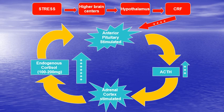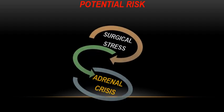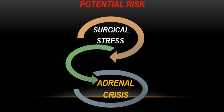If a patient takes exogenous corticosteroid therapy — more than the normal daily secretion — for more than two weeks, this suppresses ACTH secretion from the anterior pituitary, leading to no stimulation of the adrenal cortex. Subsequently, the suprarenal gland atrophies and cannot produce cortisol properly. When such a patient faces surgical stress, there is a potential risk of adrenal crisis.